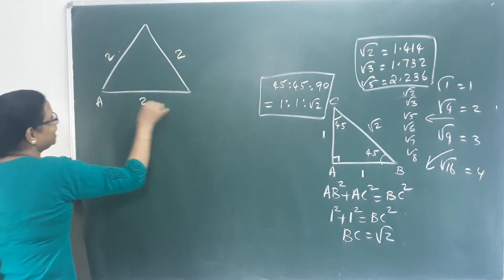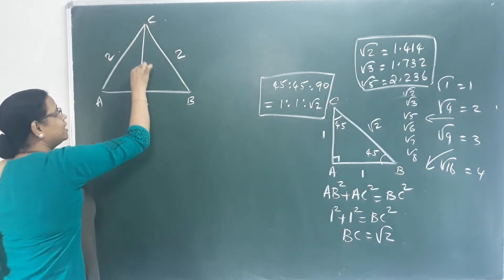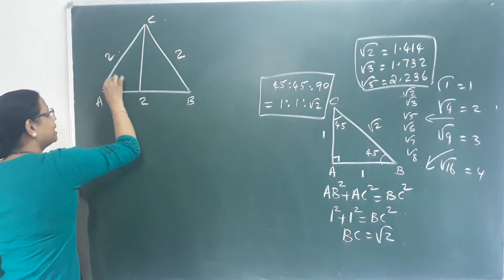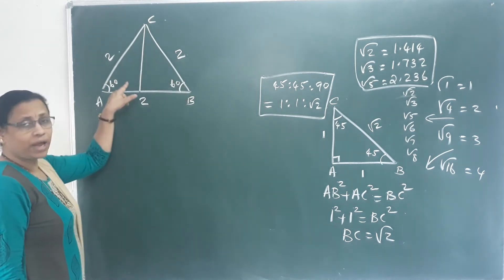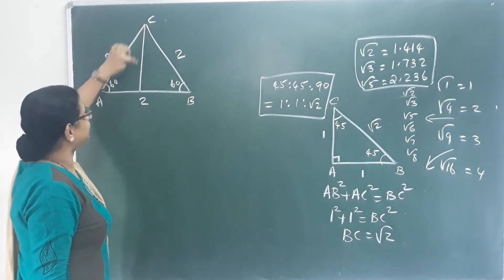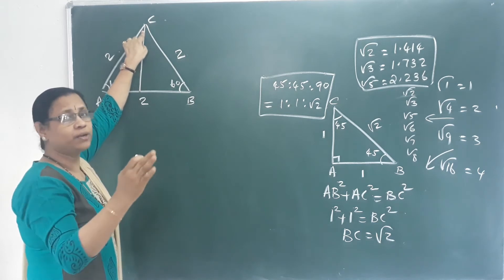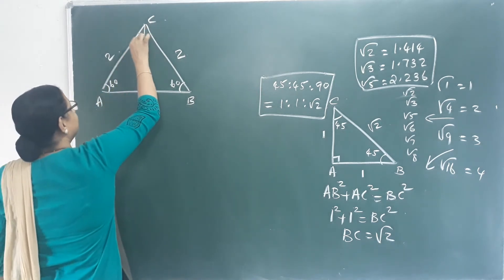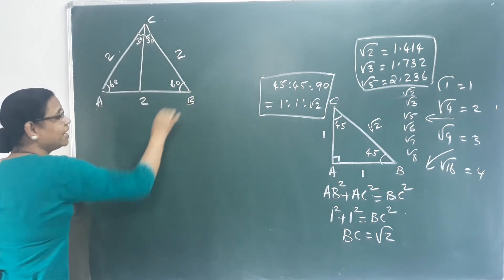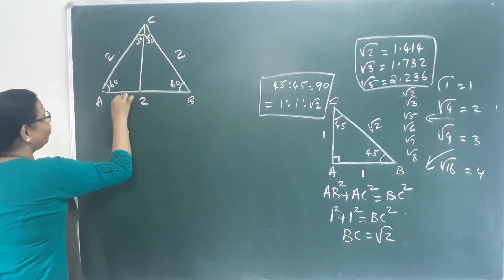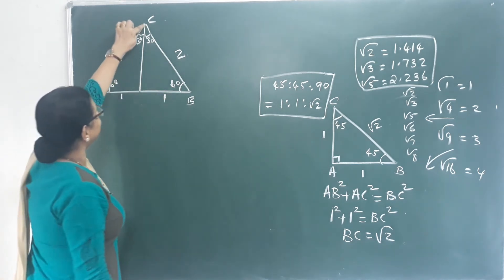So this is a, b, c. Here I have my altitude. I am joining here. This one is a 60-degree angle. Equilateral triangle — this height, the altitude, goes to the third vertex. It bisects the base. Then we have 30 degrees here, and this is 30 degrees. We divide this side into equal halves. This is 1 and this is 1. This is the height.